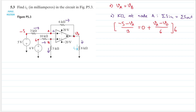Let's multiply both sides by 6 to eliminate the denominators. 3 and 6 cancel to give 2, so we have minus 10 minus 2·vA, and 6 and 6 cancel so we have vA minus v0. Simplifying, we get 3·vA minus v0 equals minus 10. Let's save this as equation 1.